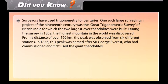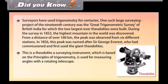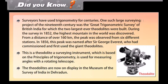Surveys have used trigonometry for centuries. One such large surveying project of the 19th century was the Great Trigonometric Survey of British India, for which the two largest theodolites were built. During the survey in 1852, the highest mountain in the world was discovered. From a distance of over 160 kilometers, the peak was observed from six different stations. In 1856, this peak was named after Sir George Everest, who had commissioned and first used the giant theodolites. A theodolite is a surveying instrument based on the principle of trigonometry, used for measuring angles with a rotating telescope. The theodolites are now on display in the museum of the Survey of India in Dehradun.